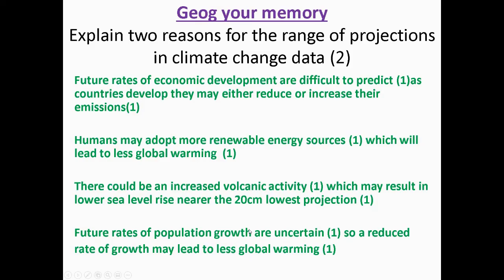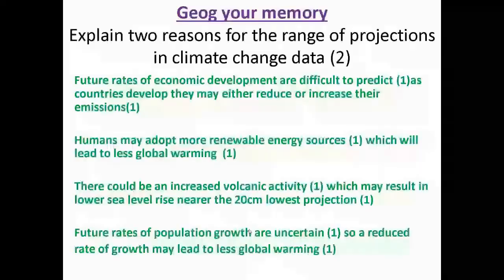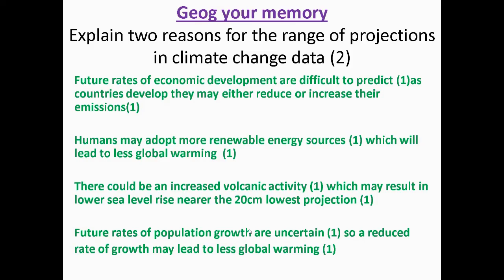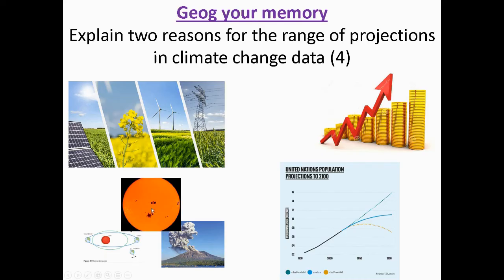And then finally, it looks at population growth. So we are uncertain about what is going to happen to the population across the world. So if we have a reduced rate of population growth, it might mean there's less global warming because less resources will be used. As a result of less resources being used, there will be less impact on the environment through global warming and emissions. So you can see that here.